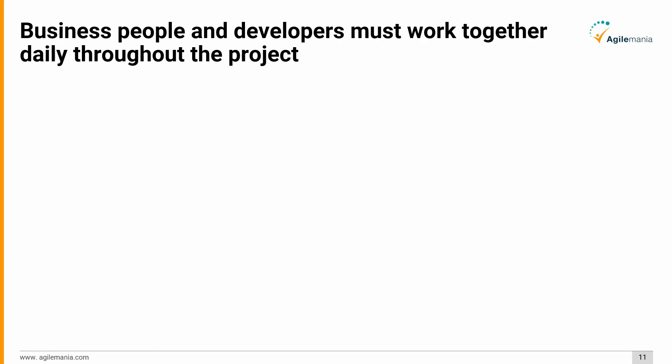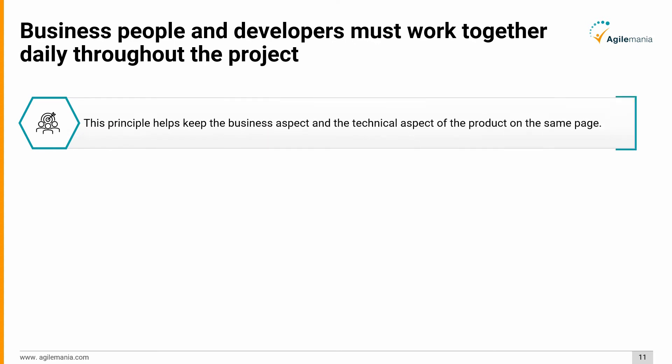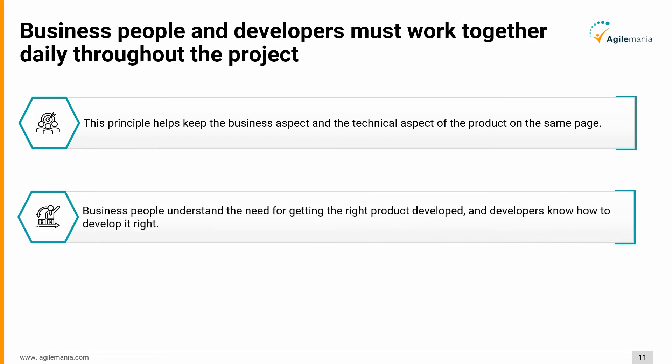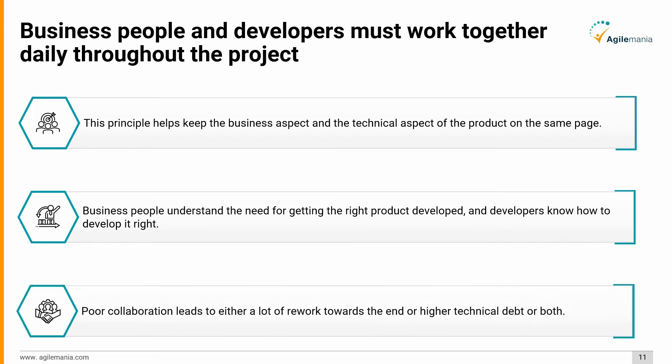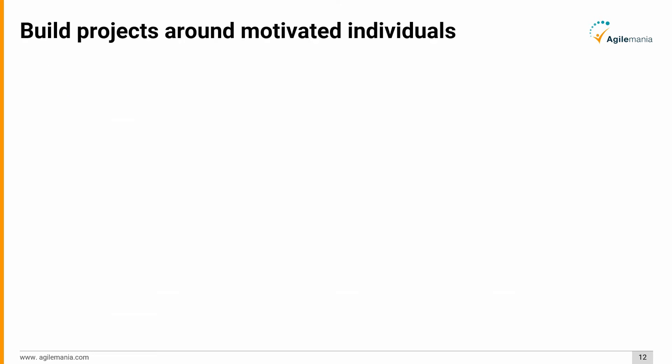The fourth principle in detail: business people and developers must work together daily throughout the project. This principle keeps the business aspect and the technical aspect of the product on the same page. Business people understand the need for getting the right product developed, and developers know how to develop it right. Poor collaboration leads to a lot of rework, higher technical debt, or both.